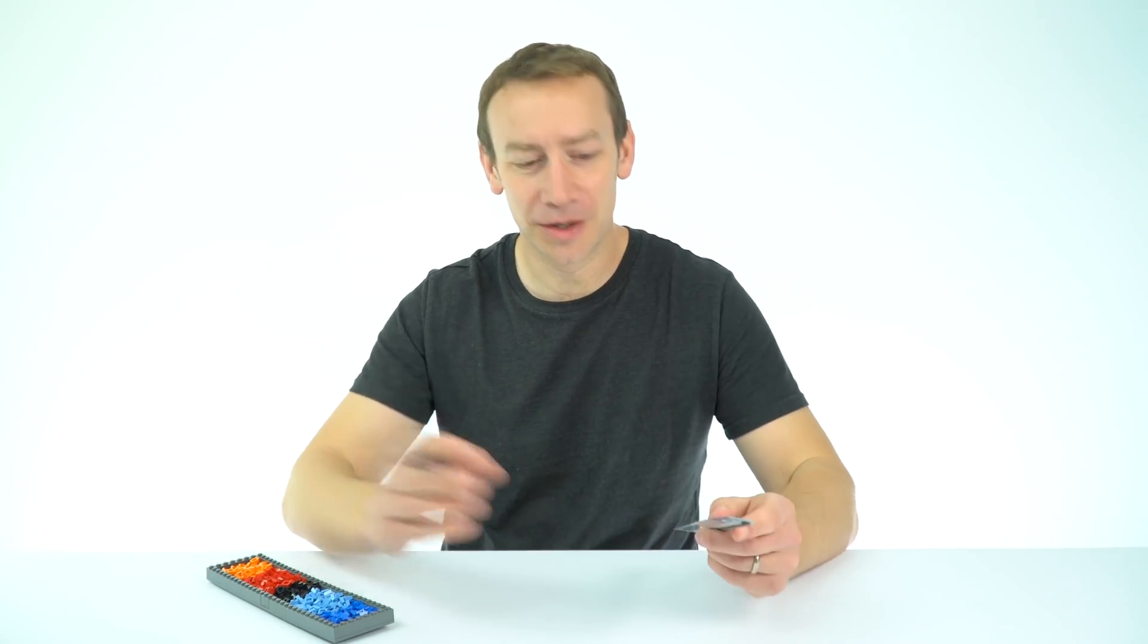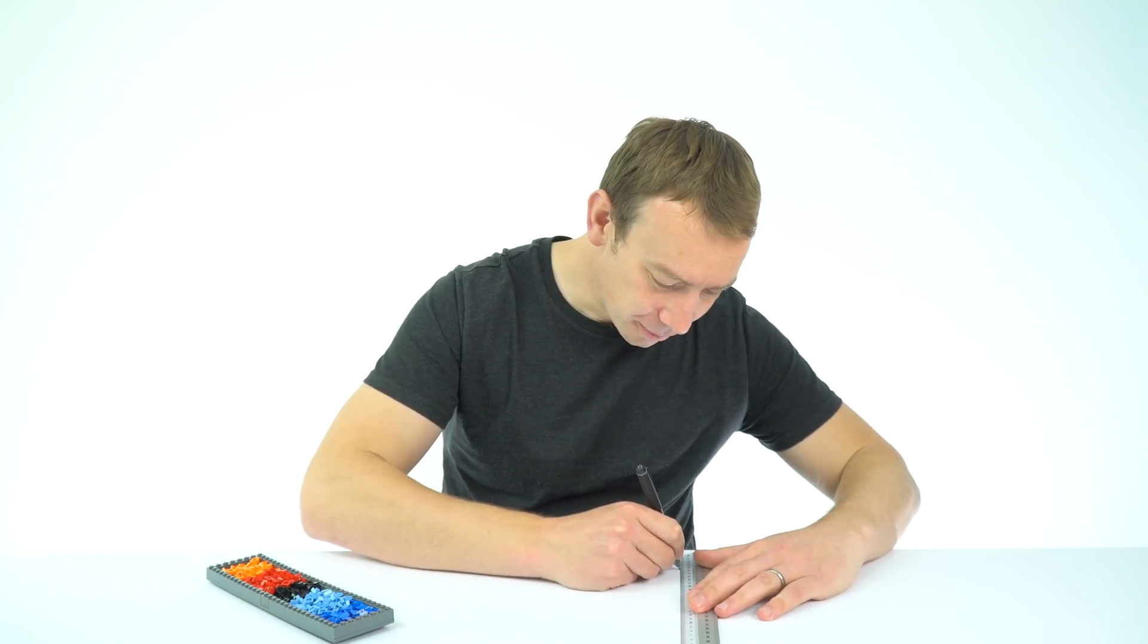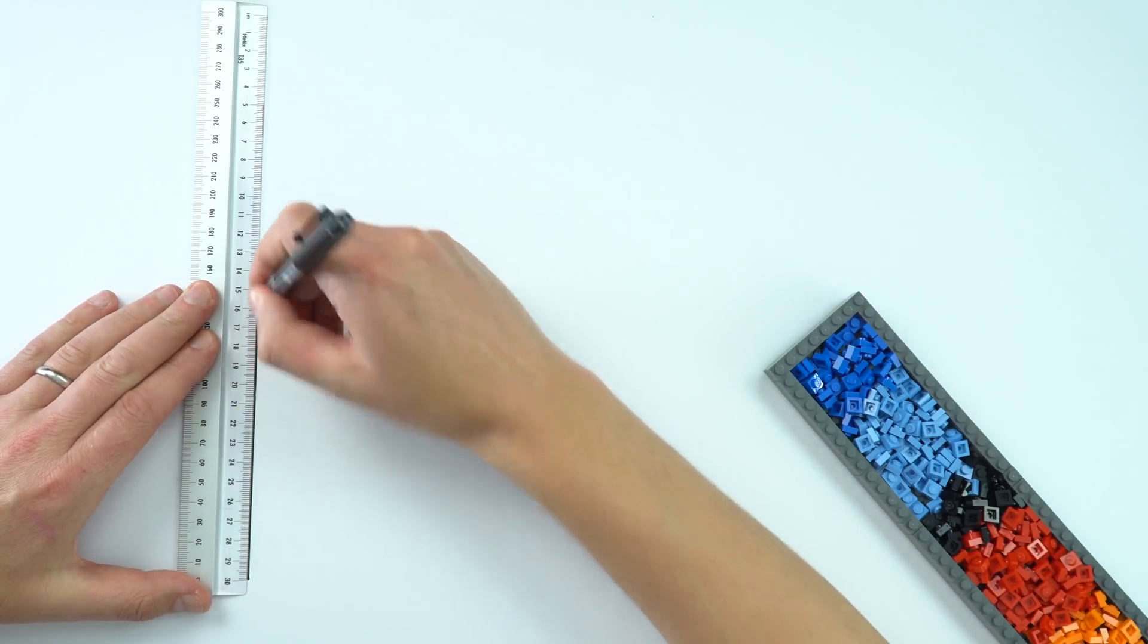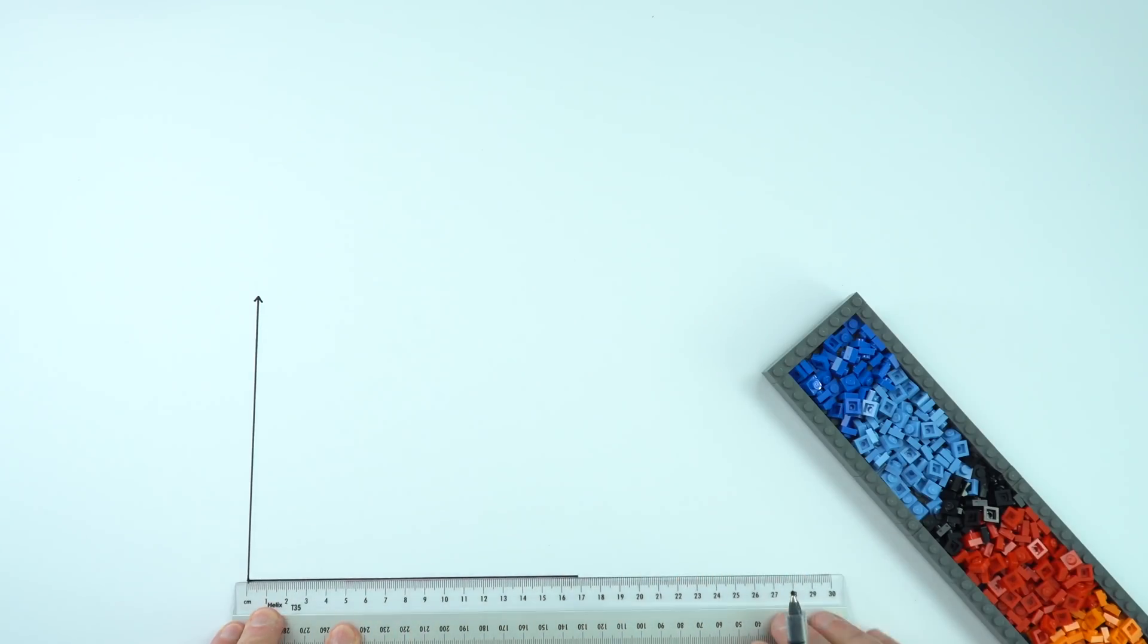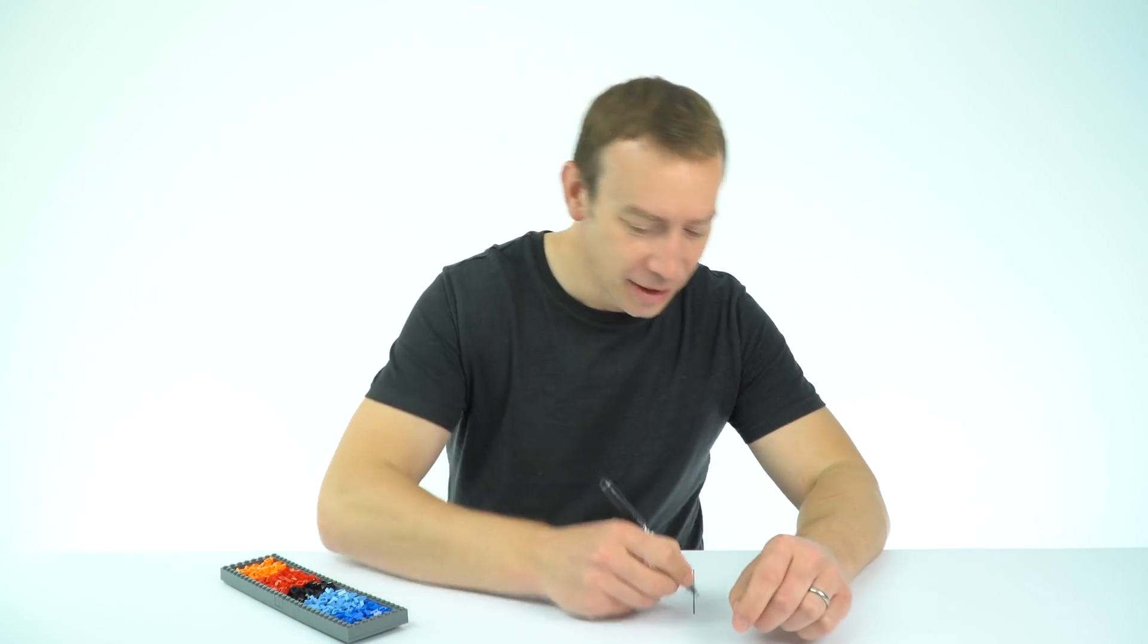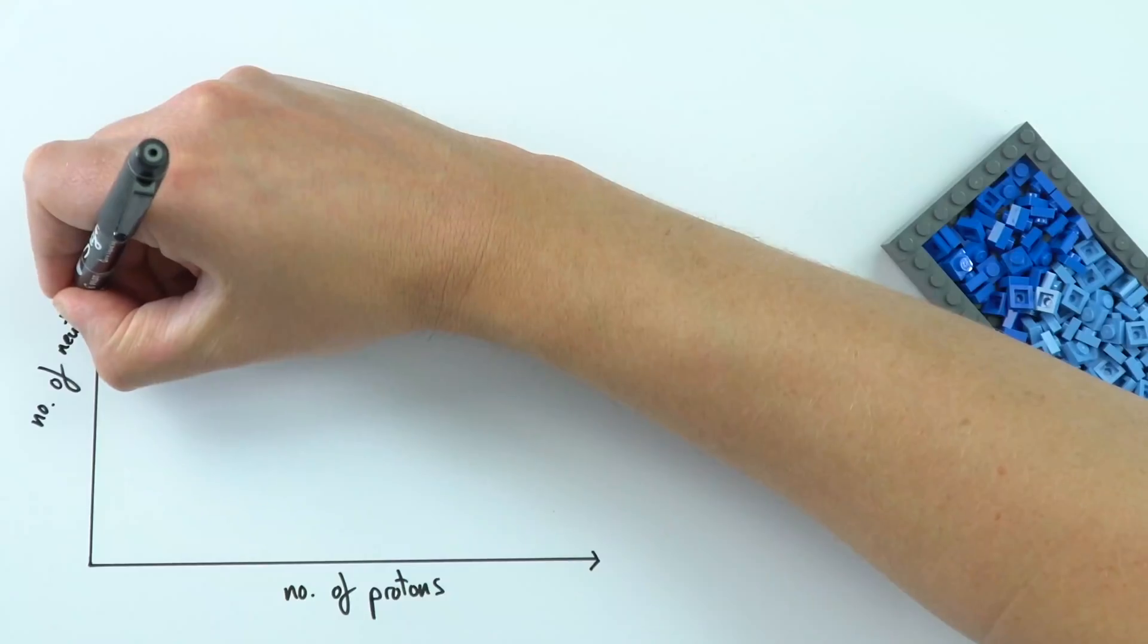Now in physics we love graphs because they can tell stories and explain the world around us. So for this graph or chart that I'm going to plot I'm going to have the x and y-axis as normal and going across on the x-axis we're going to have the number of protons and as you might recall this defines which element we have and up the side I'm going to have the number of neutrons.